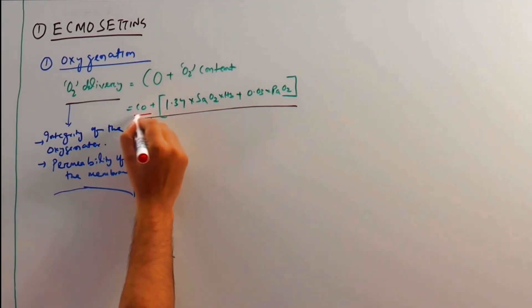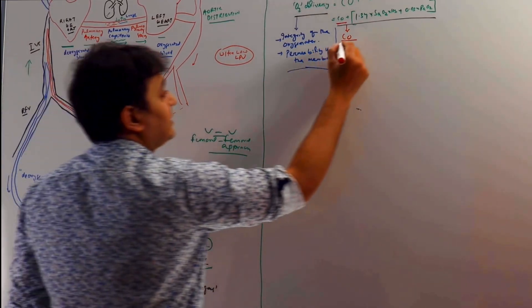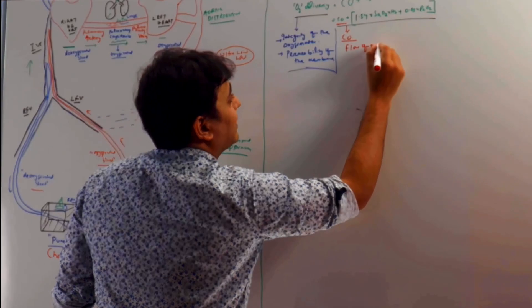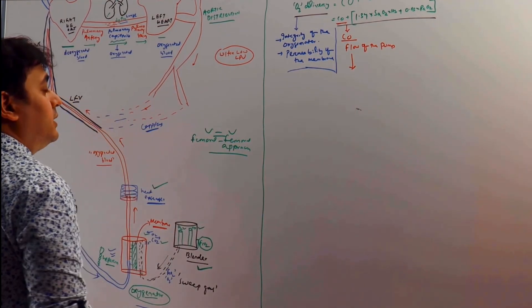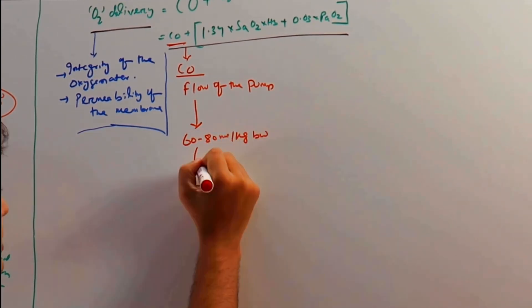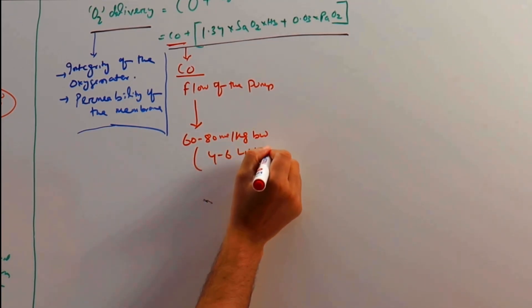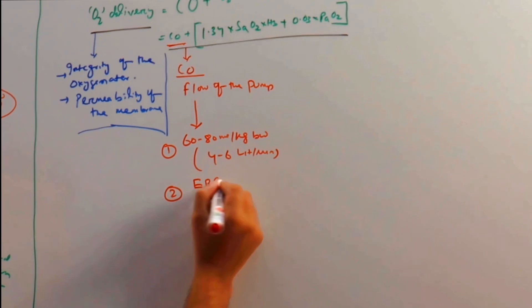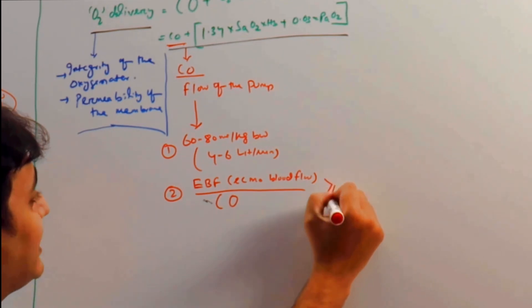The next point is cardiac output. In ECMO, the cardiac output is actually the pump flow. The ideal flow is 60 to 80 ml per kg of body weight, which in an adult patient comes to around 4 to 6 liters per minute. The second point is the ECMO blood flow (EBF) divided by the native cardiac output — this ratio should always be more than or equal to 60 percent.